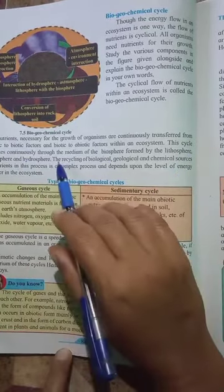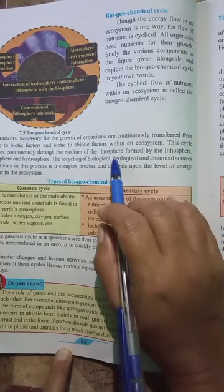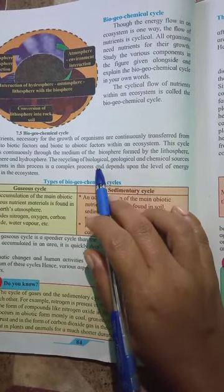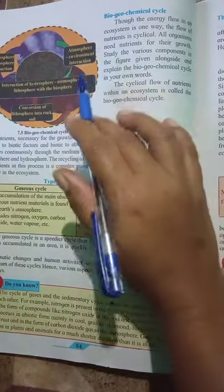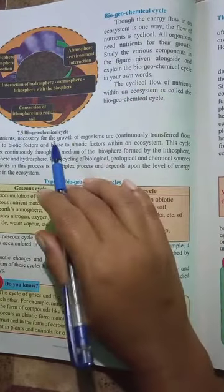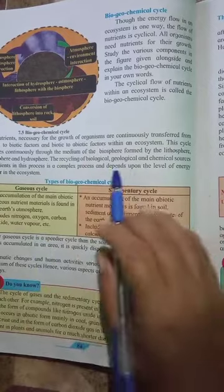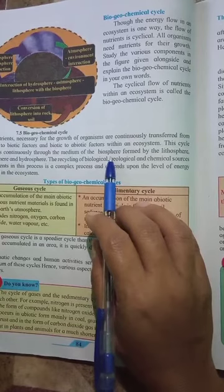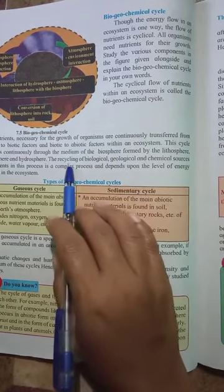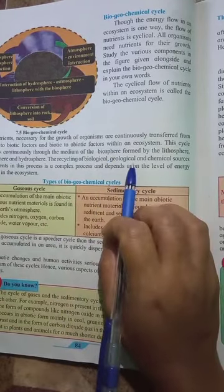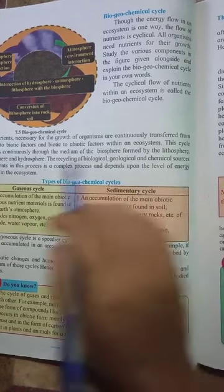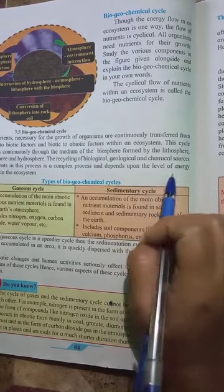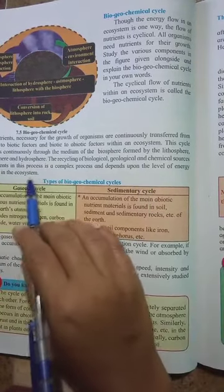This cycle operates continuously through the medium of the biosphere. The biosphere contains the atmosphere, lithosphere, hydrosphere — all of this is included in the biosphere. The recycling of biological, geological, and chemical sources of nutrients in this process is a complex process and depends upon the level of energy transfer in the ecosystem.